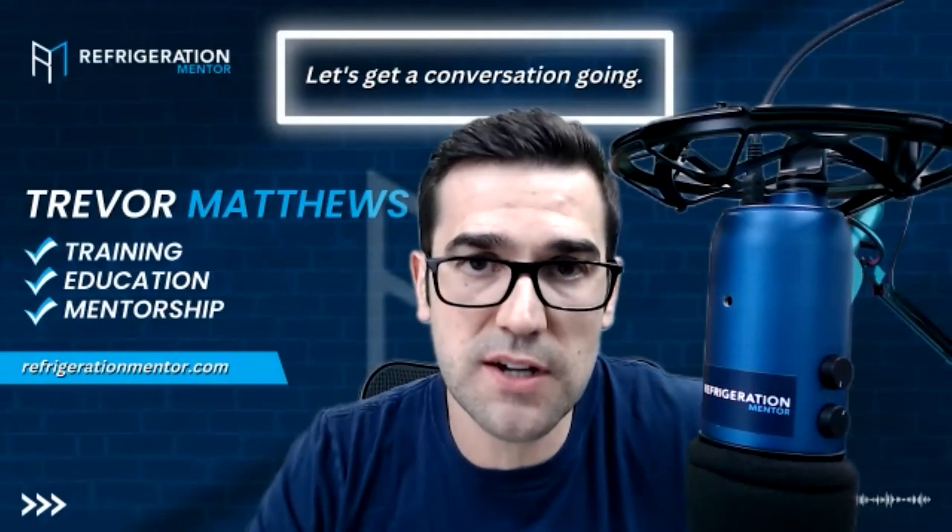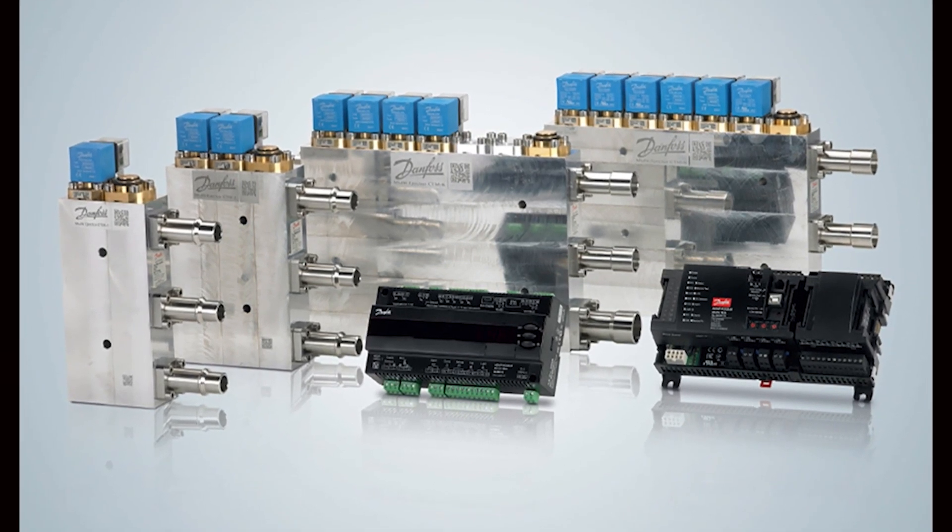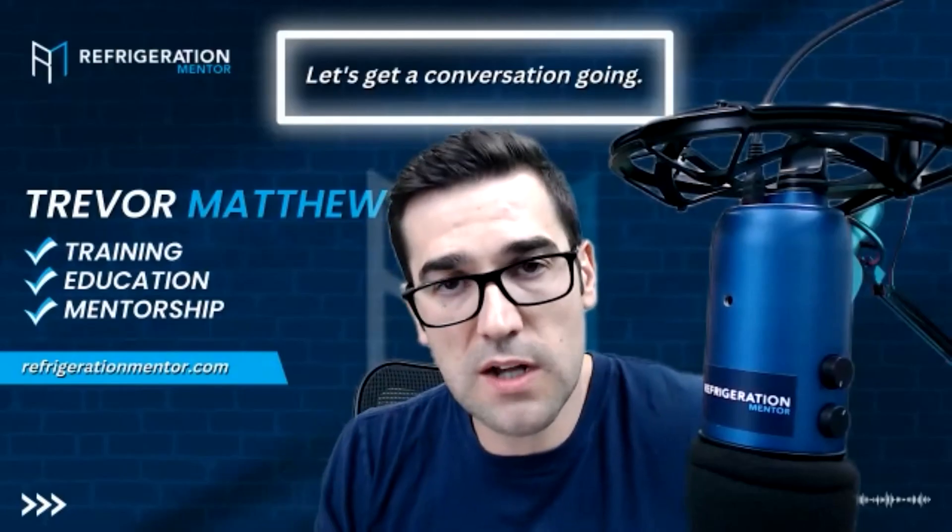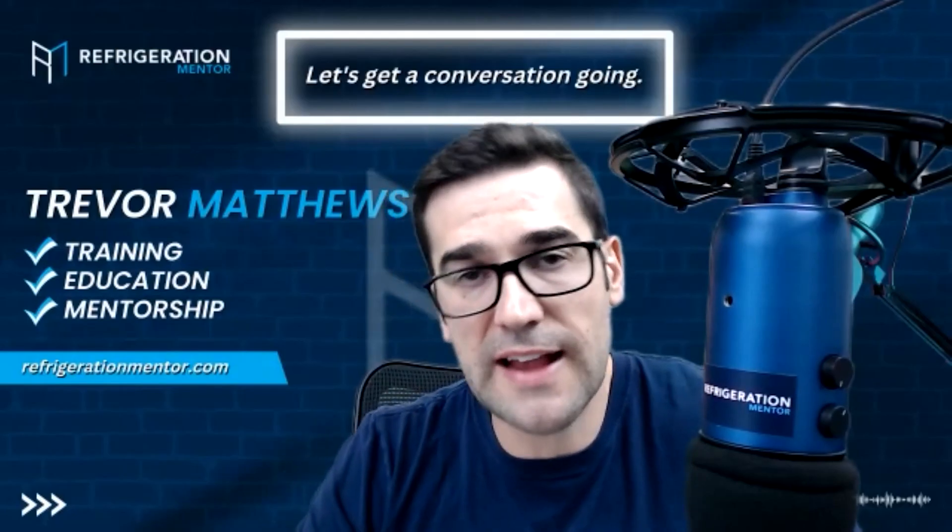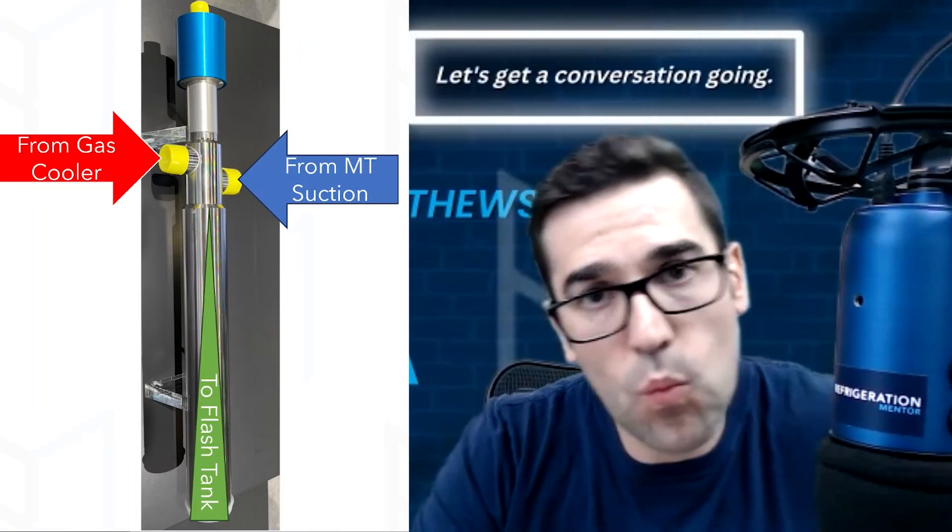The first time I saw an ejector was the Danfoss multi-ejector. It's this big block with a lot of solenoids on it and looks really intimidating at first. But as you walk through it and get a better understanding of how it works, you have two lines coming in and one going out.